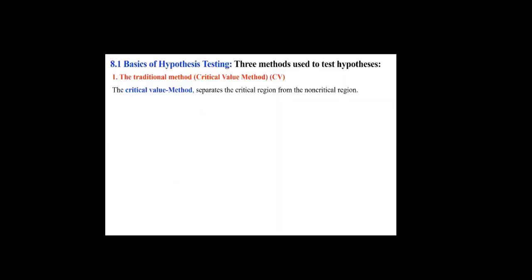Basics of hypothesis testing — three methods are used. The first is the traditional critical value method. We find the critical value, which separates the critical region from the non-critical region. We've already seen its definition.